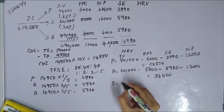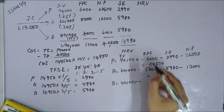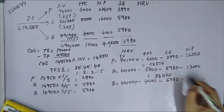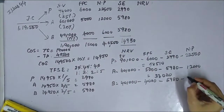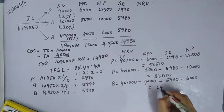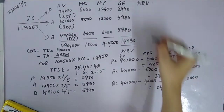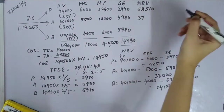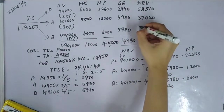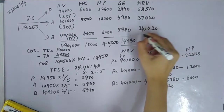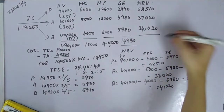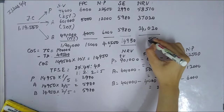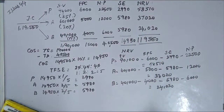For by-product B: sale value 40,000, minus further process cost 4,000, minus selling expenses 5,980, minus net profit 6,000. The total NRV across all products comes to Rs 1,19,550, which equals the joint cost.